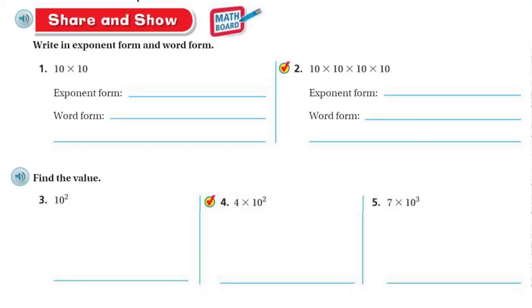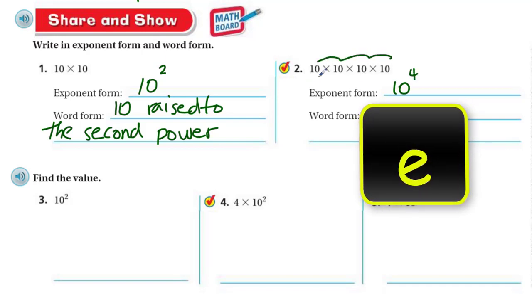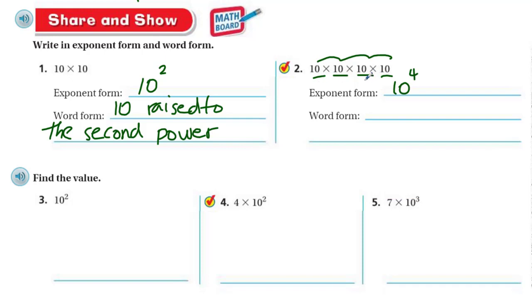Share and show. Here we go. Write in exponent form and word form. I have 10 times 10. Exponent form, that's 10 raised to the 2nd power because that is 10 times 10. The base is 10 and I have 2. Word form, 10 raised to the 2nd power. And then over here we have 10, we have 4 of them, so that's easy, 10 raised to the 4th power. Not only do we have 4 zeros but we have the base. So the base is 10, we have 4 of them. Word form would be the 4th power of 10. The 4th power of 10, I think it's probably just so you understand what's happening.